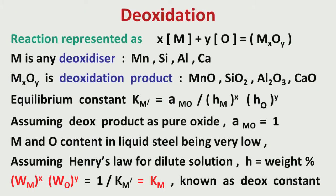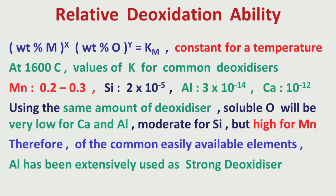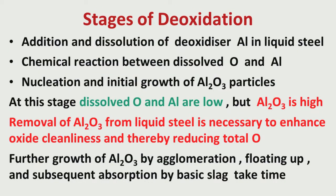Then I have talked about in detail about deoxidation — what are the issues, which element we can theoretically know is a good deoxidizer, which one is relatively moderate, and which one is relatively less effective as a deoxidizer. What are the deoxidation stages, like we require inclusions to float up for decreasing the alumina or silica, whatever inclusions have formed.